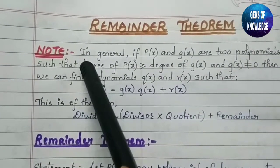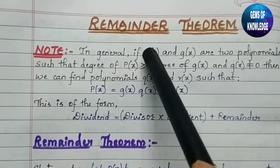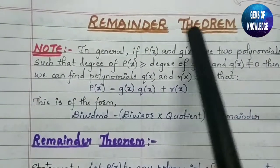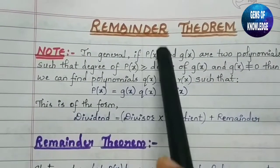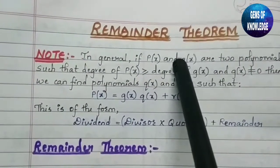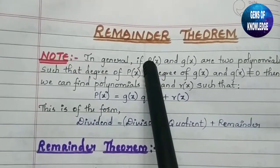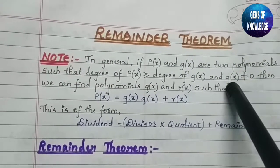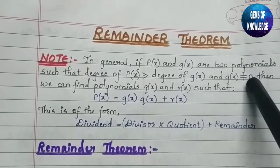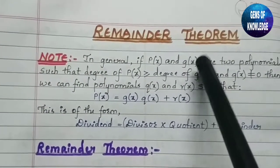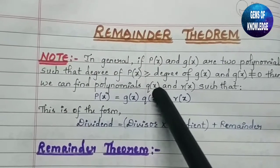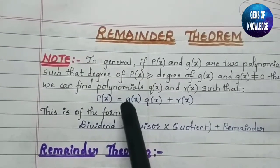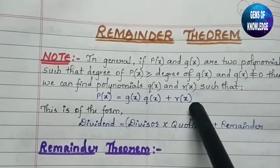This note states that if there are two polynomials p(x) and g(x) such that the degree of p(x) is greater than or equal to the degree of g(x) — for example, p(x) has degree two and g(x) has degree one — and g(x) cannot equal zero, then we can find two polynomials q(x) and r(x) such that p(x) = g(x)·q(x) + r(x).